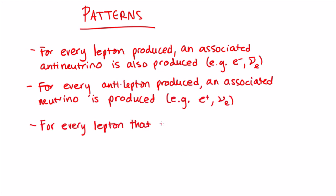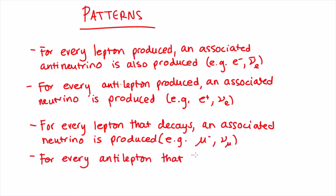For every lepton that decays, an associated neutrino is produced. And for every antilepton that decays, an associated antineutrino is produced.